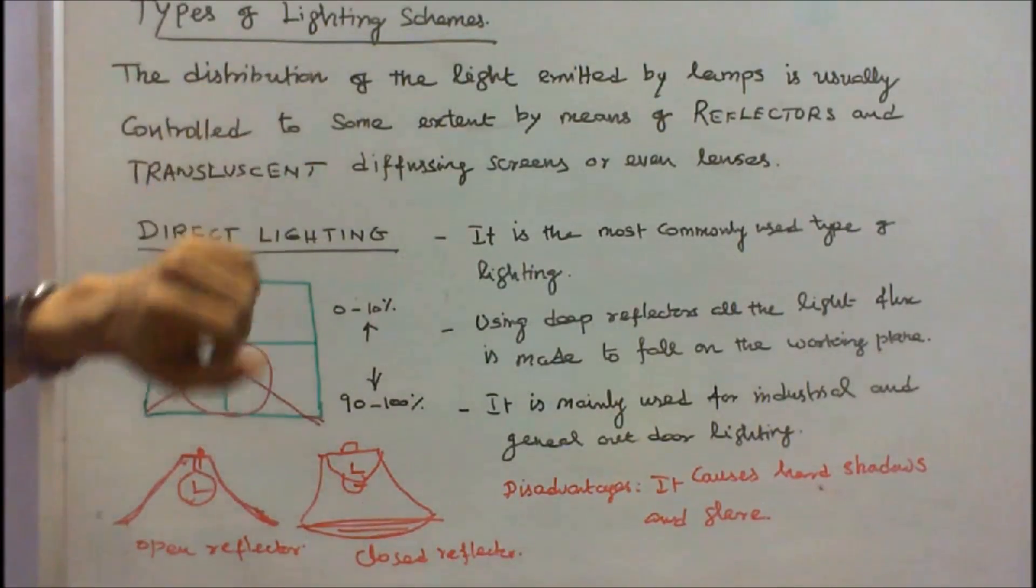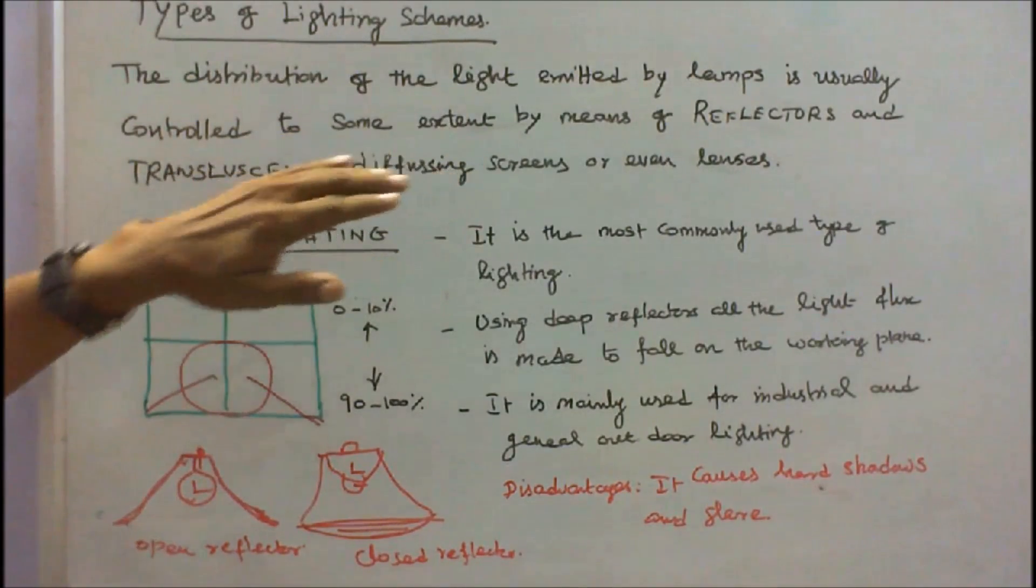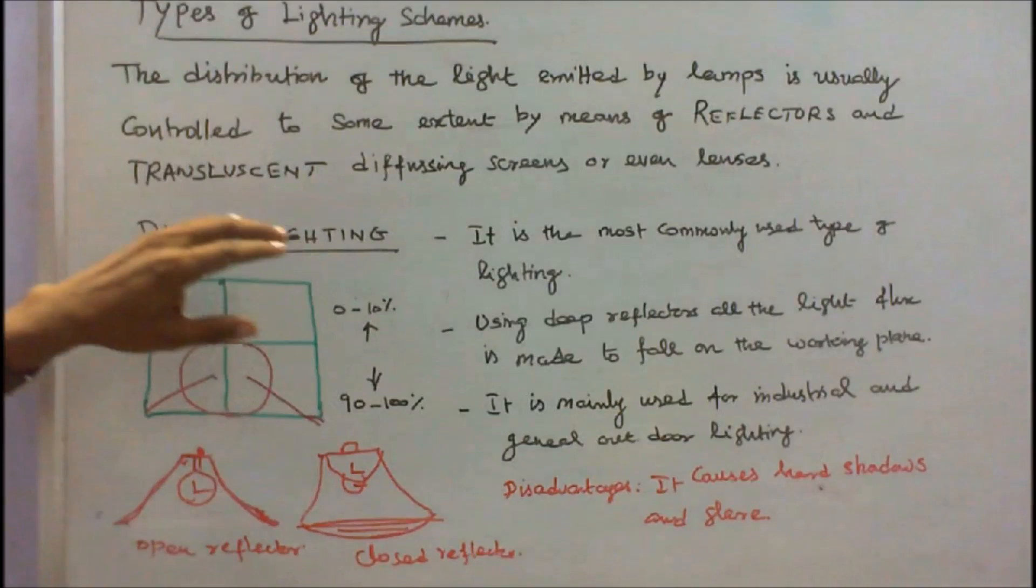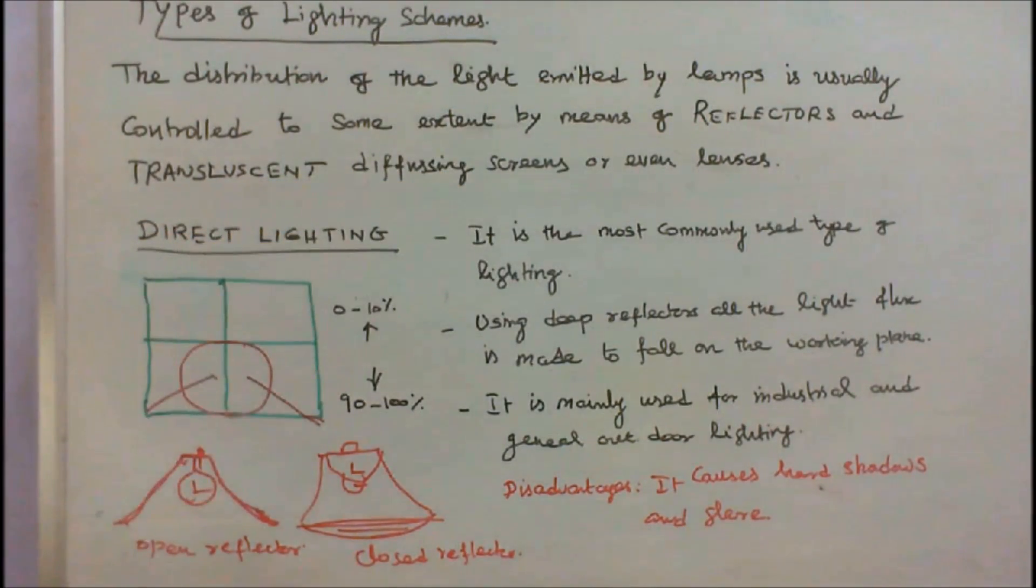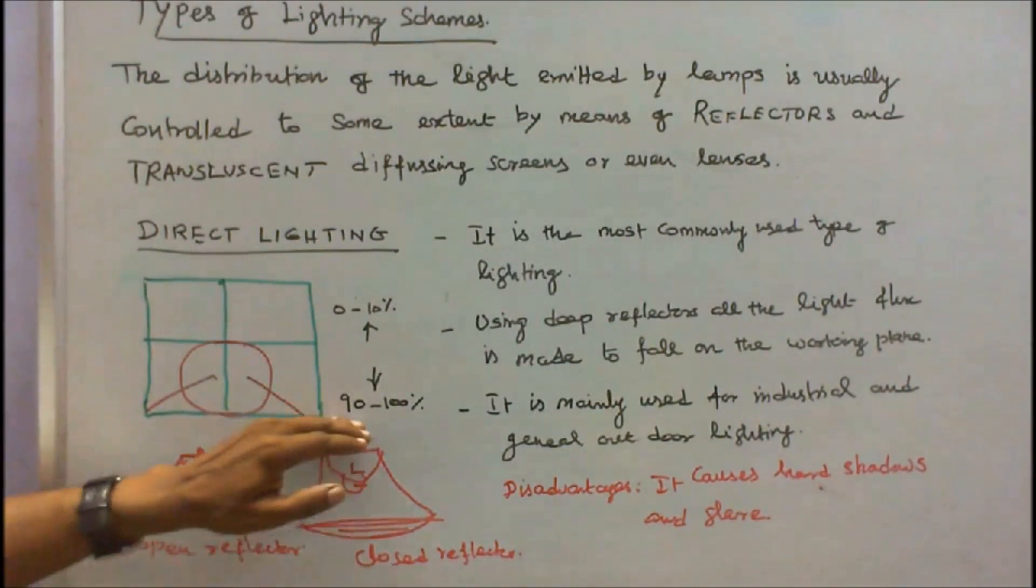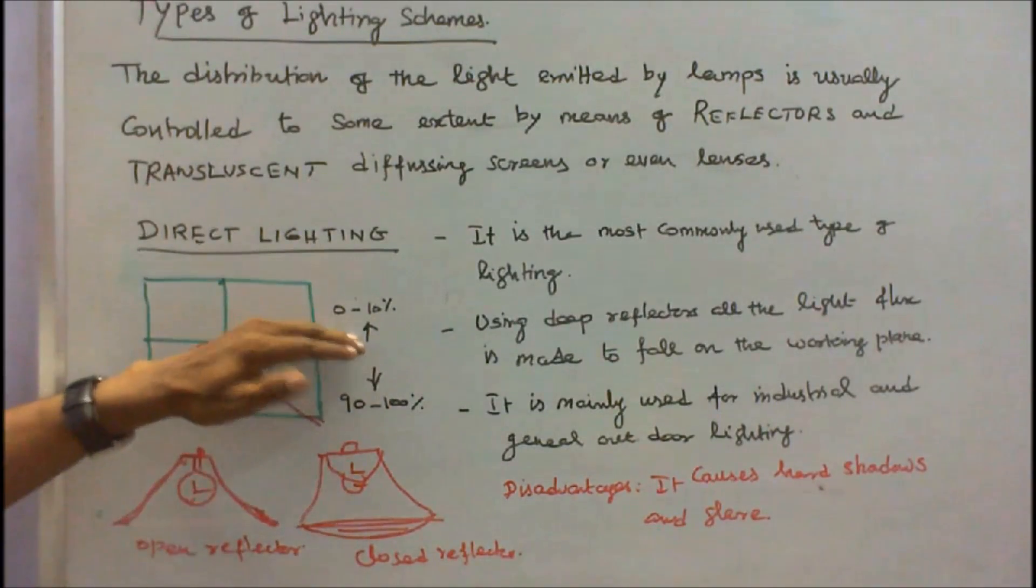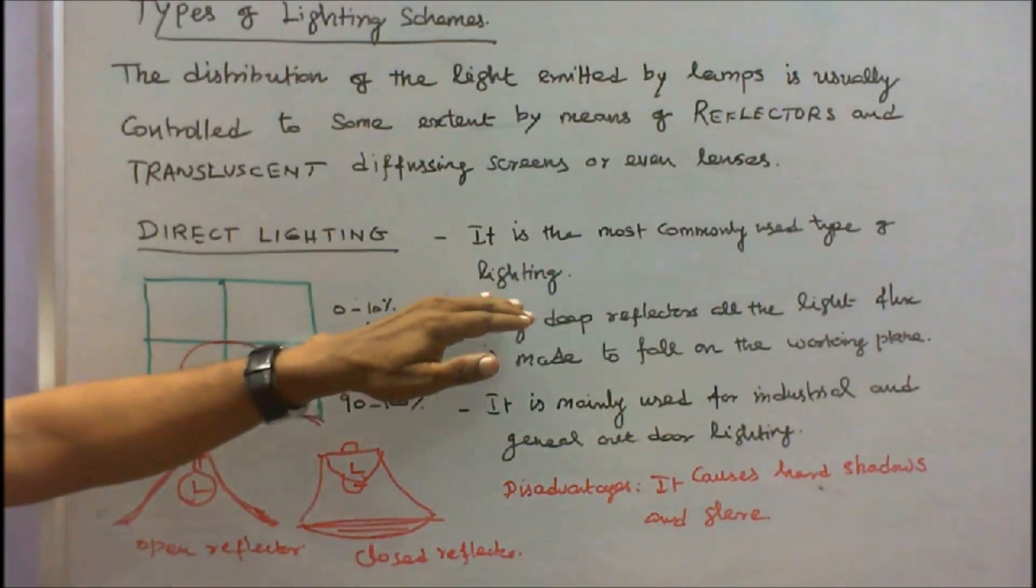Types of lighting schemes. The distribution of light emitted by lamps is usually controlled to some extent by means of reflectors and translucent diffusing screens or even lenses. The first one is direct lighting. In this scheme, 90 to 100% of the light falls downward. Only 0 to 10% goes upward. It is the most commonly used type of lighting.